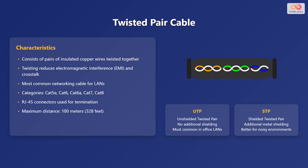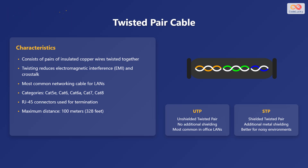They use RJ45 connectors for termination and have a maximum distance of 100 meters or 328 feet. There are two main types of twisted pair cables: unshielded twisted pair or UTP, which has no additional shielding and is most common in office LANs, and shielded twisted pair or STP, which includes additional metal shielding and is better suited for noisy environments.